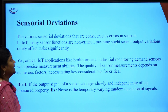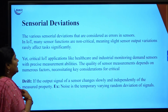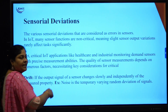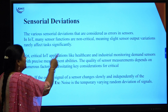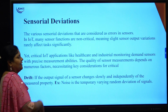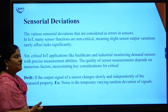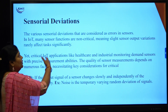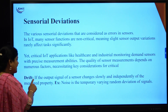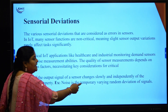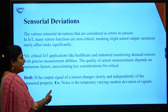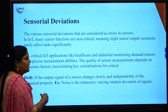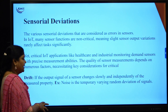The next topic is sensorial deviations, which refers to errors in sensors. IoT applications are generally non-critical, so variations in output rarely cause significant impact. However, applications like healthcare or business monitoring demand sensors with higher precision. The first type of deviation is drift — where the output signal of a sensor changes slowly and independently, detecting different values at different times, each independent of each other and the environment.